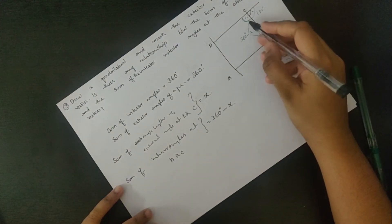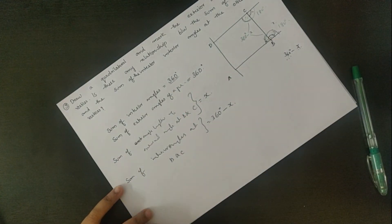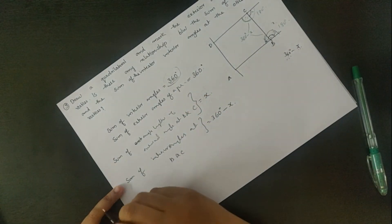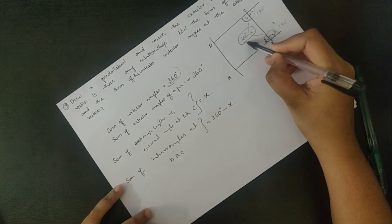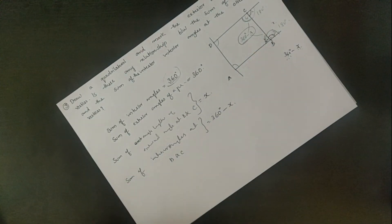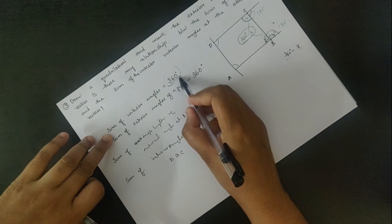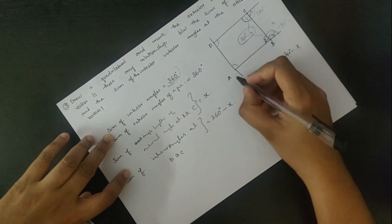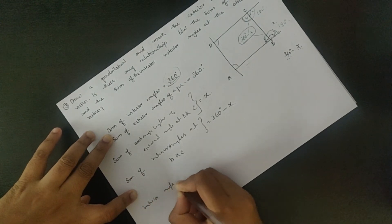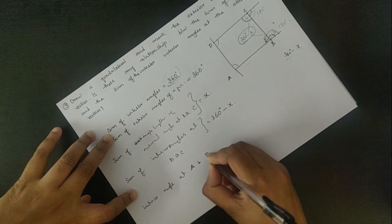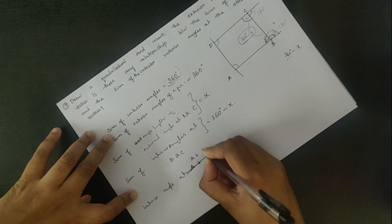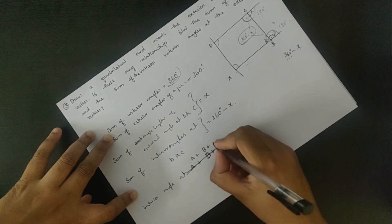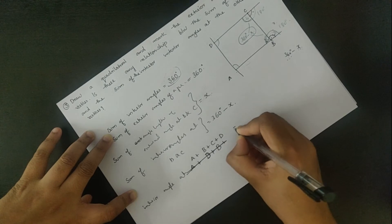So this one is equal to 360 degrees minus x. The interior angles at A plus interior angle at B plus interior angle at C plus interior angle at D equal to 360 degrees.